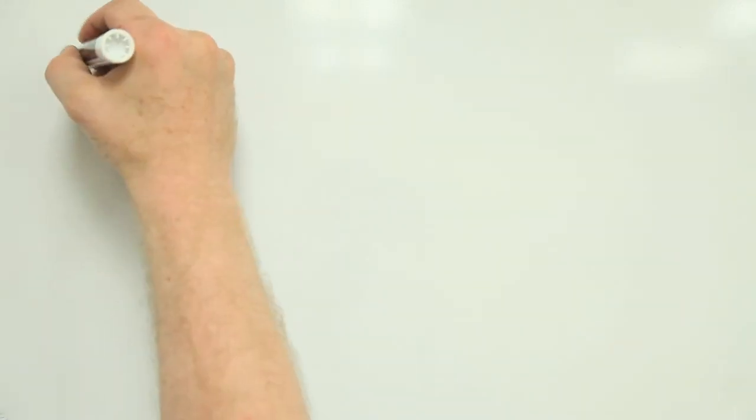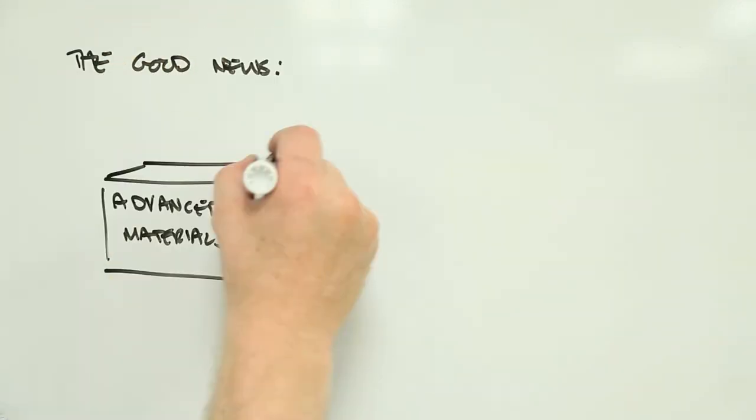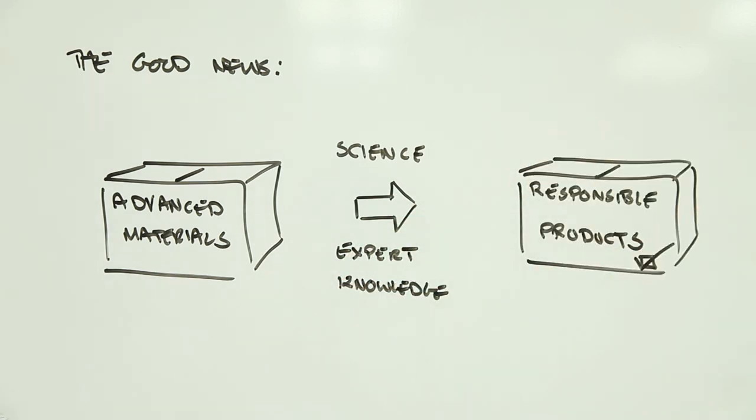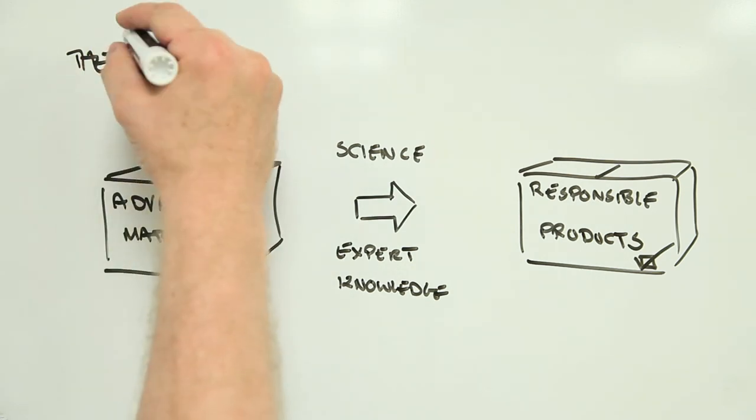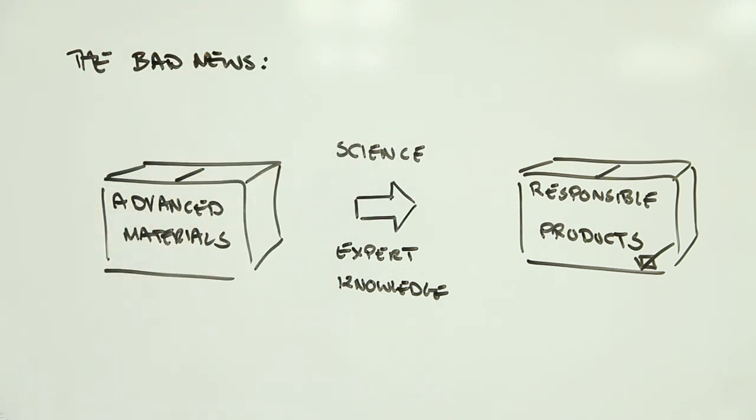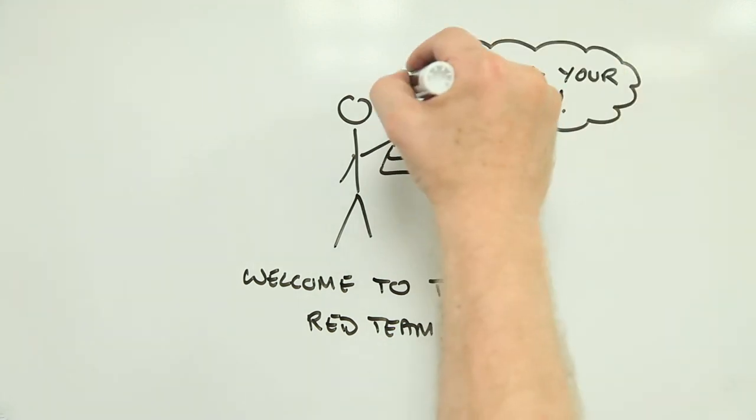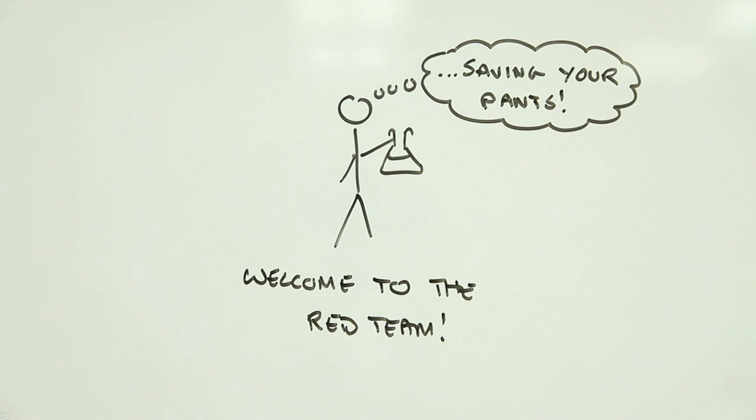By using scientific understanding and expert knowledge, many of the potential risks associated with advanced materials can be spotted and managed, or avoided altogether. That said, there are bound to be unknown unknowns, those things that a newfangled material does that no one thought of beforehand. While second guessing what these might look like can be a dangerous game, it's important to continue researching possible risks, just so we're not caught with our pants down when something unpleasant does eventually turn up.